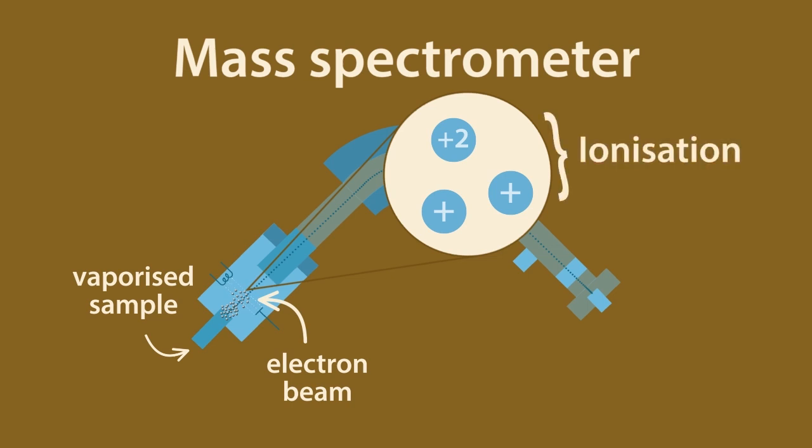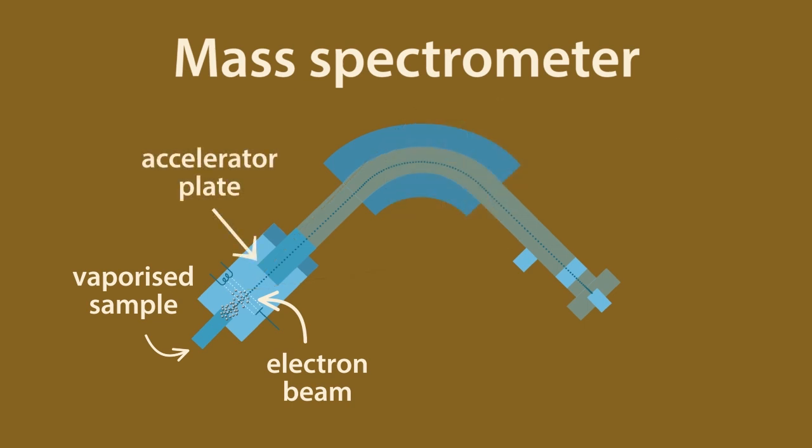The ions formed usually have a positive 1 or a positive 2 charge. These ions are then accelerated in an electric field, before being deflected by a magnetic field.